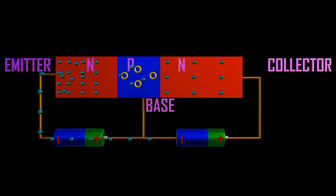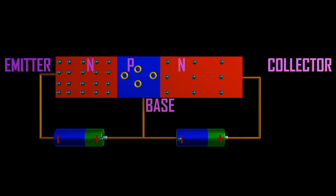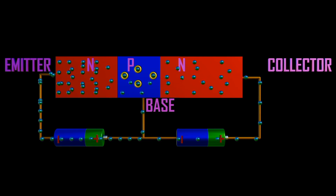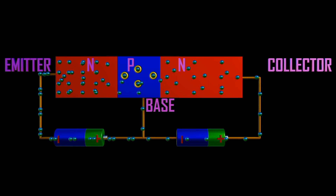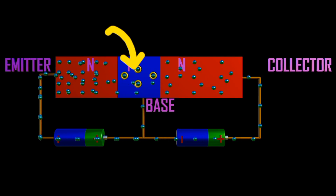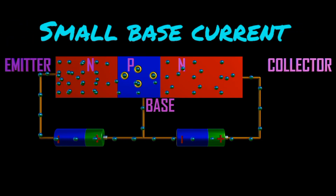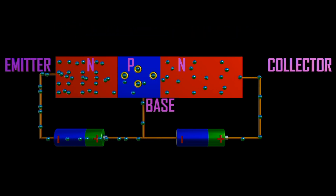The remainder of the holes crosses the base and constitutes the collector current. NPN transistor operation: forward bias is applied to the emitter-base junction and reverse bias to the collector-base junction. The forward bias causes electrons to move towards the base, constituting the emitter current. As these electrons flow towards the P-type base, they try to recombine with holes. Since the base is lightly doped, only a few electrons recombine with holes within the base, constituting a small base current.